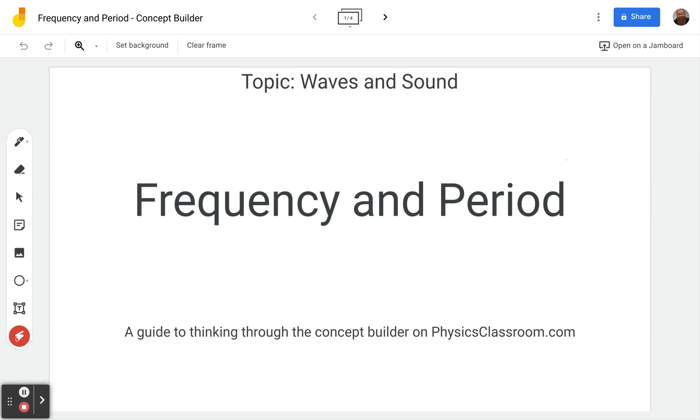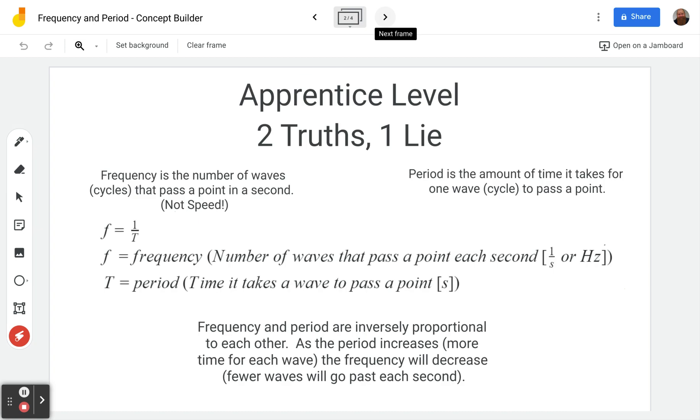This concept builder can look at either waves traveling with certain frequency or period or an object just vibrating back and forth in place. So the first level is the apprentice level called two truths and a lie. Keep in mind you're supposed to be selecting the lie, the thing that is not true. I know that goes against our instinct which is to highlight the things that are true, but go ahead and select the thing that is the lie.